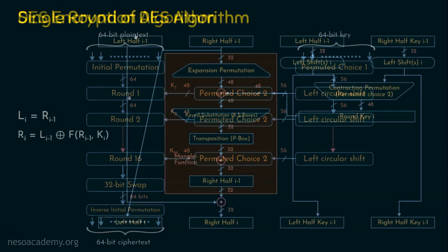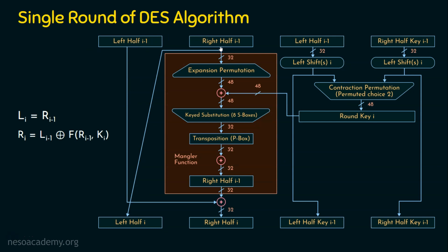Now, what happens in every round? The 64 bits sent have a left-hand side part and a right-hand side part. The right-hand side part is 32 bits. It is first expanded from 32 bits to 48 bits. The round key is received from the key scheduling algorithm, and the output of the expansion permutation and the round key are XORed, giving 48 bits. These 48 bits are given to the S-box (substitution function), which reduces 48 bits to 32 bits. These 32 bits are then given to the P-box (permutation box), where only the position of the bits are changed. This is what exactly happens in the mangler function, also called the F-function, operating on the right-hand side 32 bits.